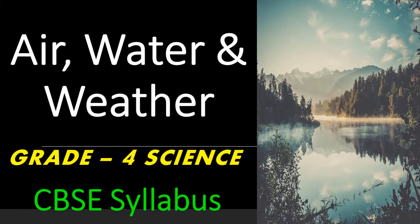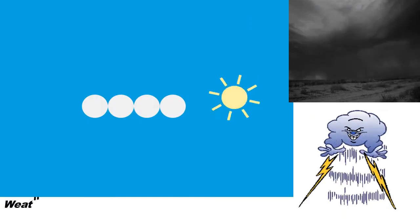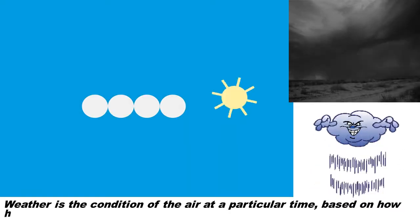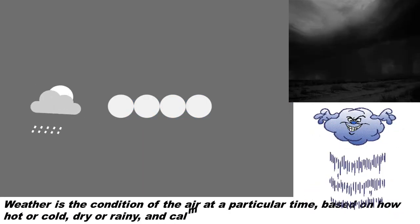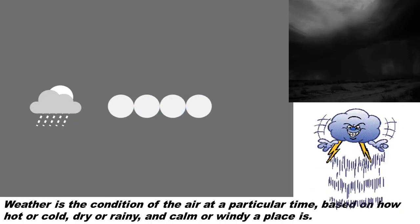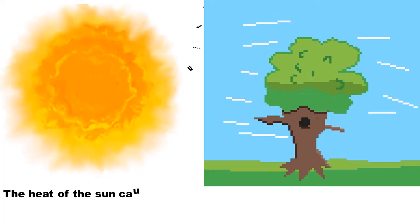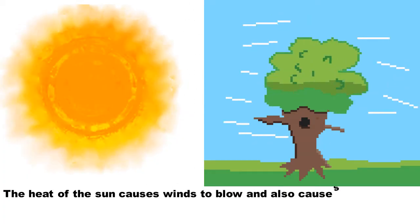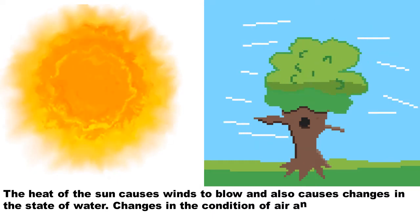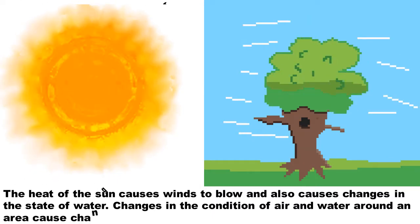Air, water and weather. Weather is the condition of the air at a particular time, based on how hot or cold, dry or rainy, and calm or windy a place is. The heat of the Sun causes winds to blow and also causes changes in the state of water. Changes in the condition of air and water around an area cause changes in weather.